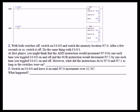Before we get any deeper, basically what we had you do was flip on the switch wired up to memory location I:0/0, then after a few seconds turn it off, and then do the same with the switch wired up to memory location I:0/1. You might have thought that the add instruction would increment register N7:0 by one each time you toggled the switch on and off, and the subtract instruction would decrement N7:1 by one each time you toggled switch I:0/1 on and off.